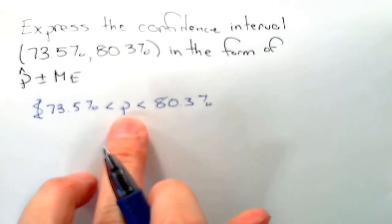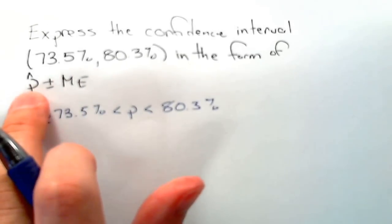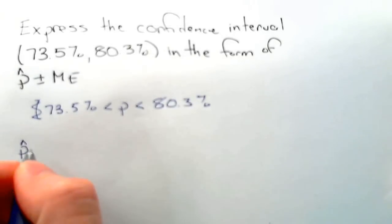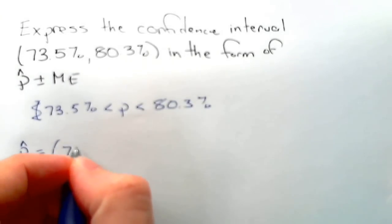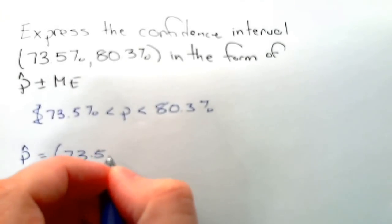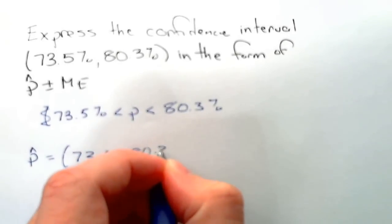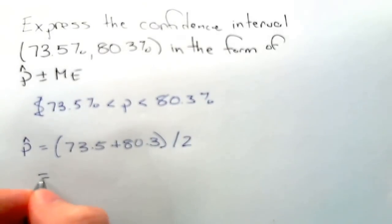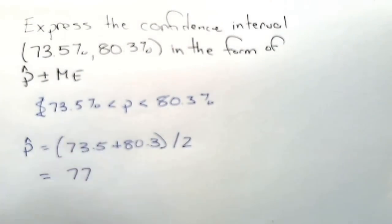So to find this middle value, which is the p hat, it's going to be the average of the two. So p hat is equal to 73.5 plus 80.3 divided by 2. And typing that in the calculator, we get 77. So that's our p hat.